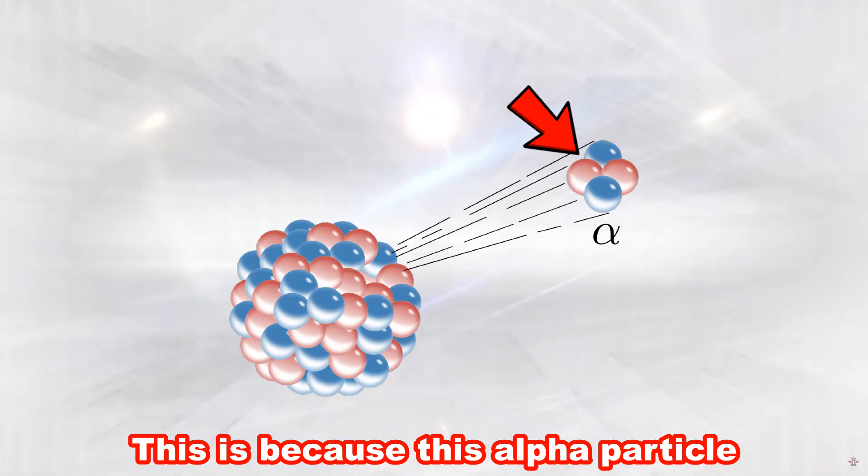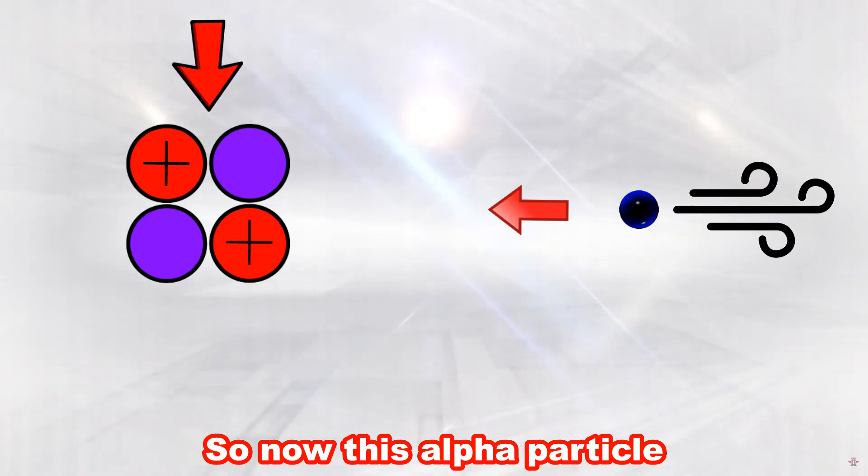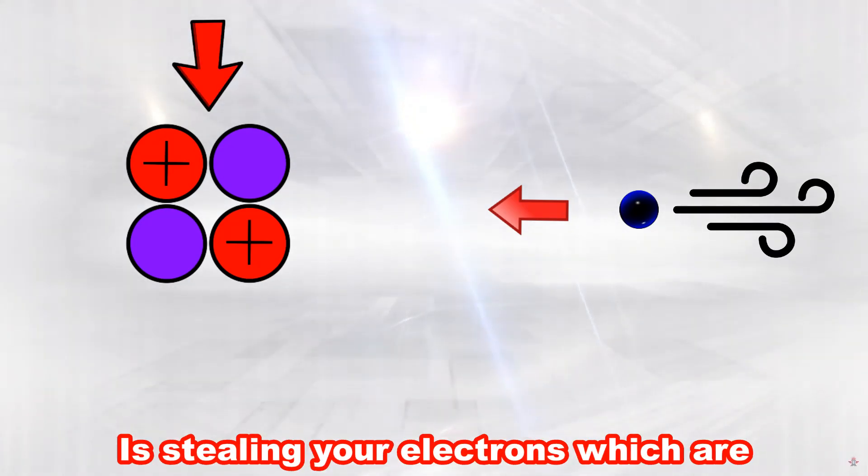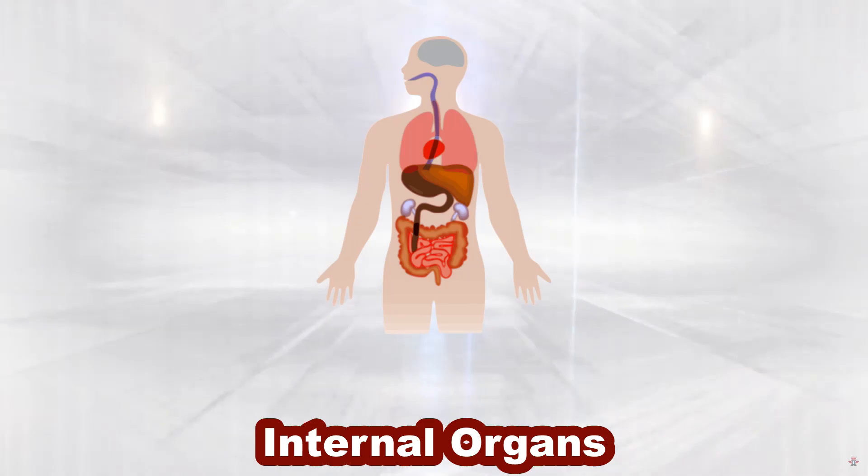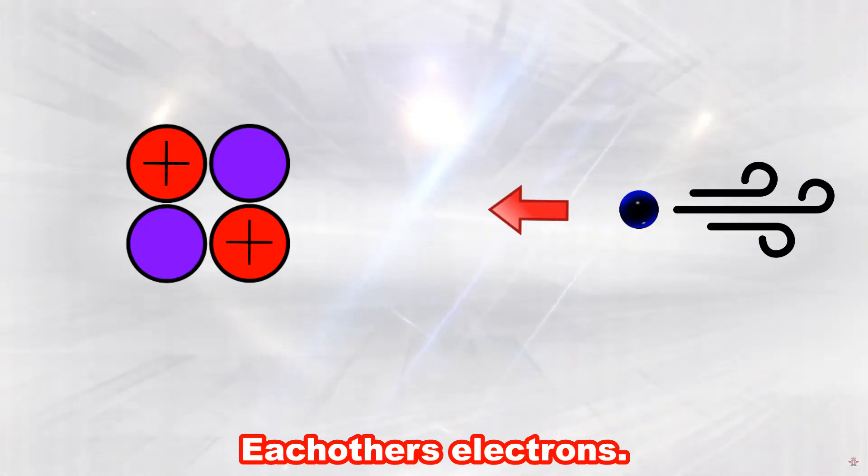This is because this alpha particle is positively charged so it is trying to attract electrons. So now this alpha particle is stealing your electrons which are inside your internal organs. This causes a chain reaction of atoms trying to steal each other's electrons.